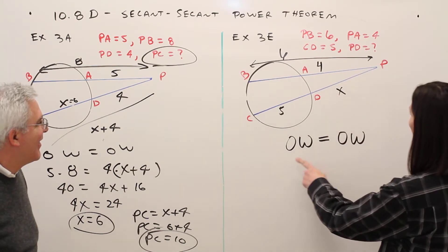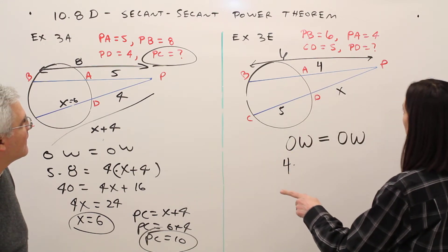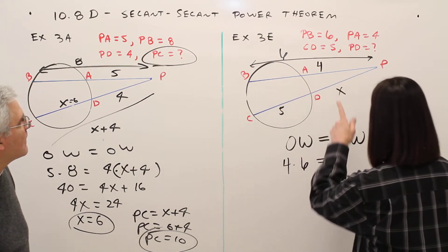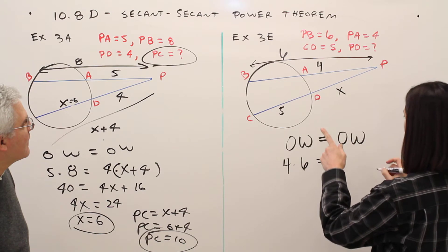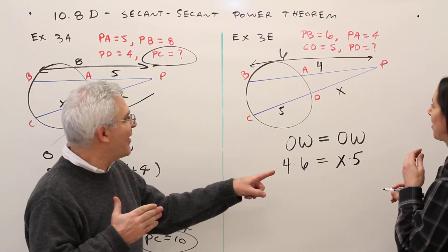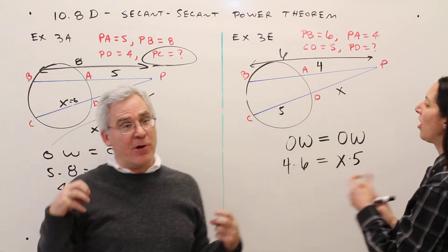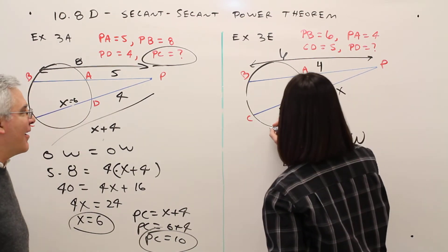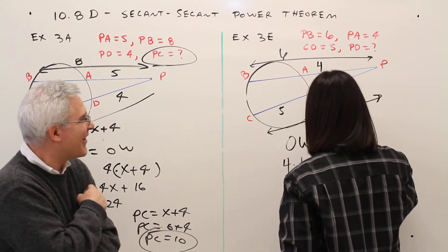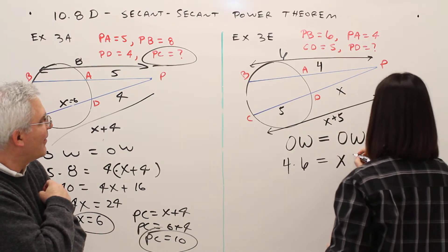So I learned out equals out. So let's take a look here. My outside, it looks like it was 4, and my hole is 6. And then my outside, I've got X, and then for a hole, 5. But I think you made the same mistake. Where? You don't just multiply numbers you see. Maybe if you drew the hole. Oh, I should have labeled it. So my outside was X, but my hole was X plus 5.